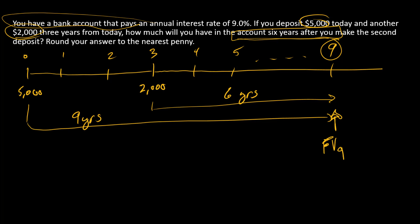We've got a discount rate of nine percent that we're going to use in our calculations. And so our future value in year nine is, we'll first calculate the future value of this $5,000.